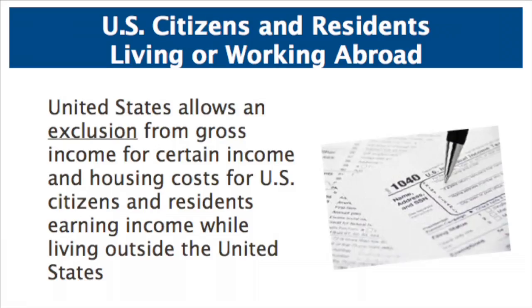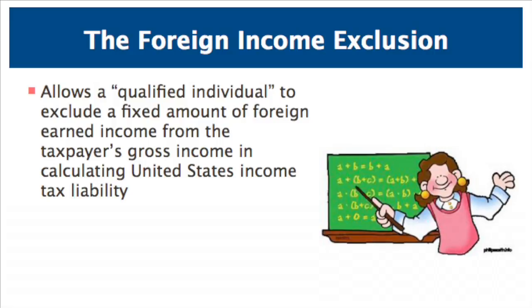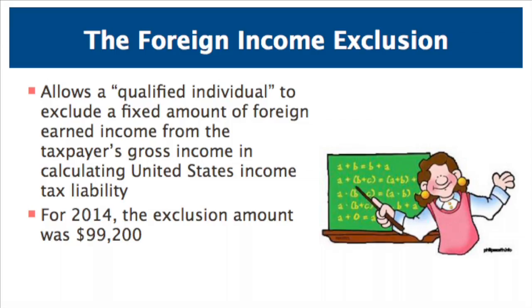As you learned in the reading materials, the United States allows U.S. citizens and residents an exclusion for certain income earned while working outside the United States. The exclusion is commonly known as the foreign income exclusion. It allows a qualified individual to exclude from gross income a fixed amount of foreign earned income in calculating the taxpayer's U.S. income tax liability. The exclusion amount is indexed for inflation, so the amount increases over time. The exclusion amount for 2014 was $99,200.